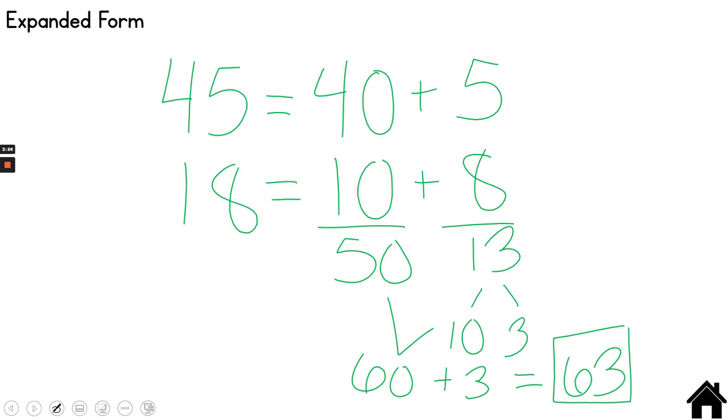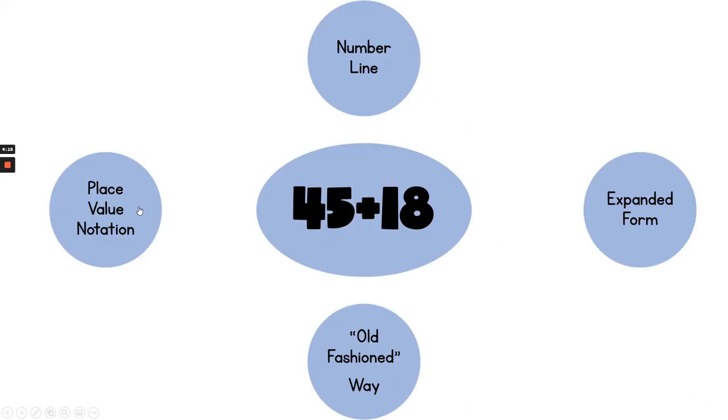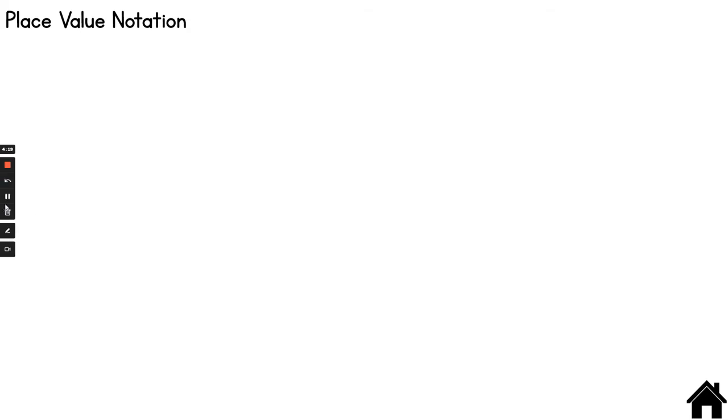Once again notice that I drew a square around my final answer. That's how you can use expanded form to find your answer. Just simply break your number up into tens and ones and then add from there. Let's try another strategy. Next let's do place value notation.